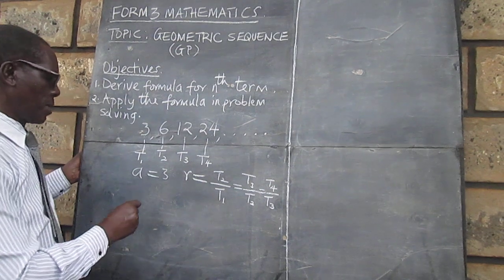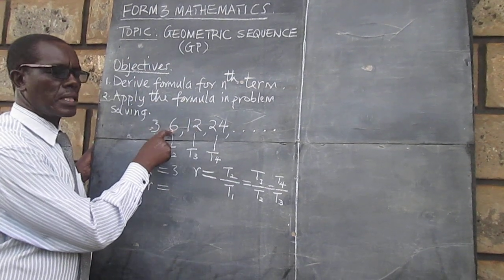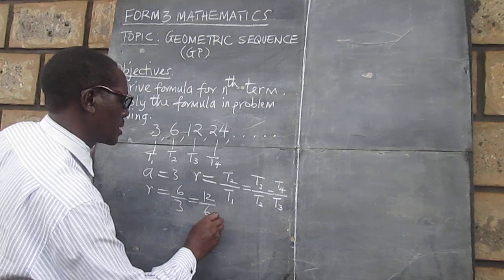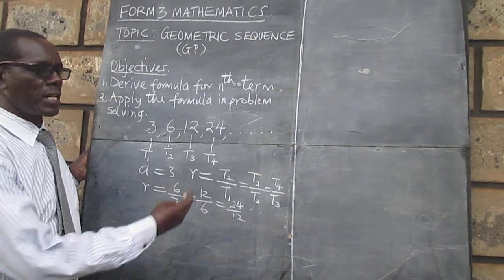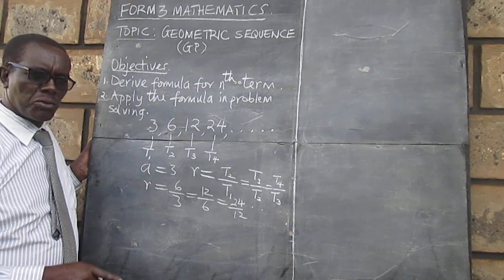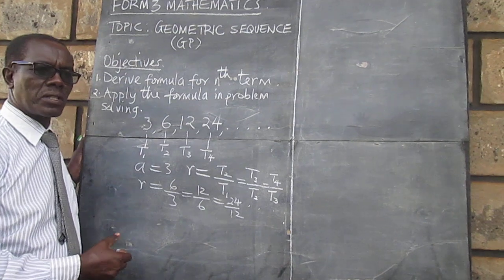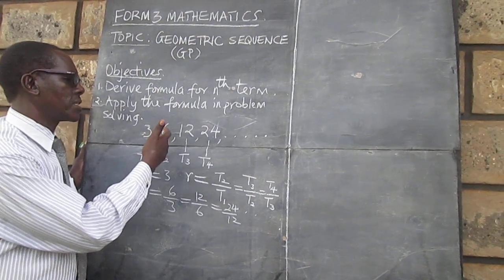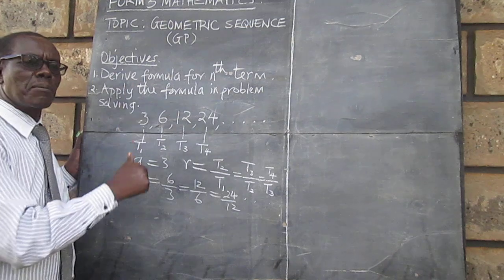In our case here, the constant ratio becomes 6 divided by 3, or 12 divided by 6, or 24 divided by 12. So 6 over 3 is the same as 12 over 6, which is the same as 24 over 12, and so on. You can see there is a slight difference between an arithmetic progression and a geometric progression. In AP, we always get a common difference — the difference between the second and first is equal to the third and second — obtained by subtracting.